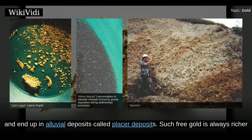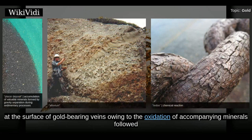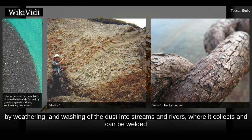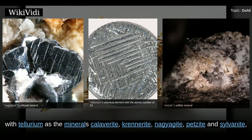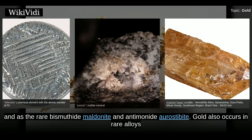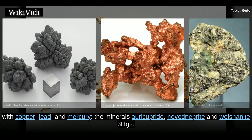Such free gold is always richer at the surface of gold-bearing veins, owing to the oxidation of accompanying minerals followed by weathering and washing of the dust into streams and rivers, where it collects and can be welded by water action to form nuggets. Gold sometimes occurs combined with tellurium as the minerals calaverite, krenerite, nagyagite, petzite and sylvanite, and as the rare bismuthide maldonite and antimonide ustarasite. Gold also occurs in rare alloys with copper, lead and mercury — the minerals auricupride, novodneprite and weishanite.